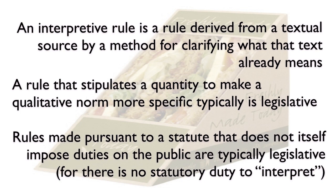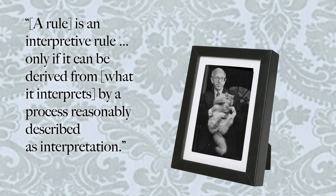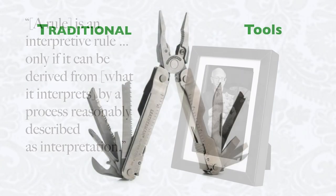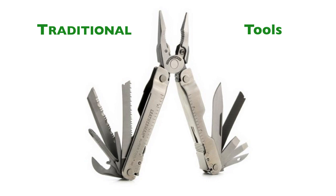Recall the distinction between interpretive rules and so-called legislative rules. Drawing a line between them is not easy, but the best advice comes from Judge Richard Posner of the Seventh Circuit. A rule is an interpretive rule only if it can be derived from what it interprets by a process reasonably described as interpretation.